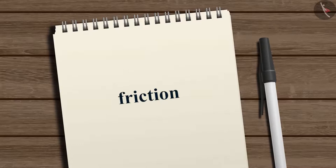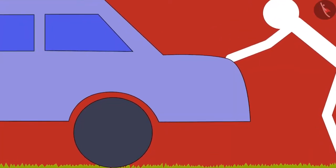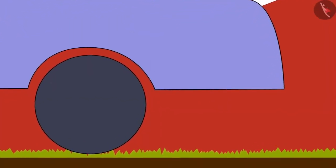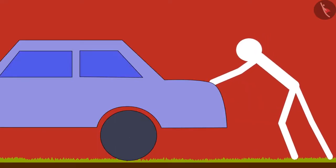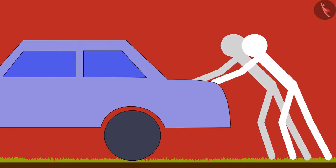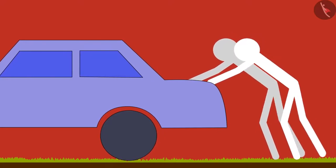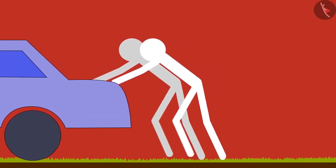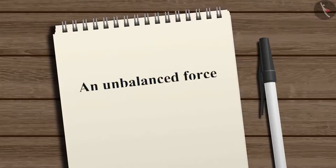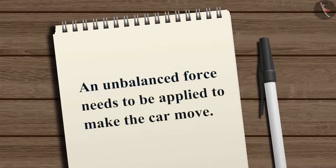This is due to the friction acting in the opposite direction of the push. Friction arises as the wheels of the car are in contact with the rough surface. Here, the force of friction balances the pushing force and hence the car does not move. To move the car, we need to apply a force greater than the force of friction, that is, an unbalanced force needs to be applied to make the car move.